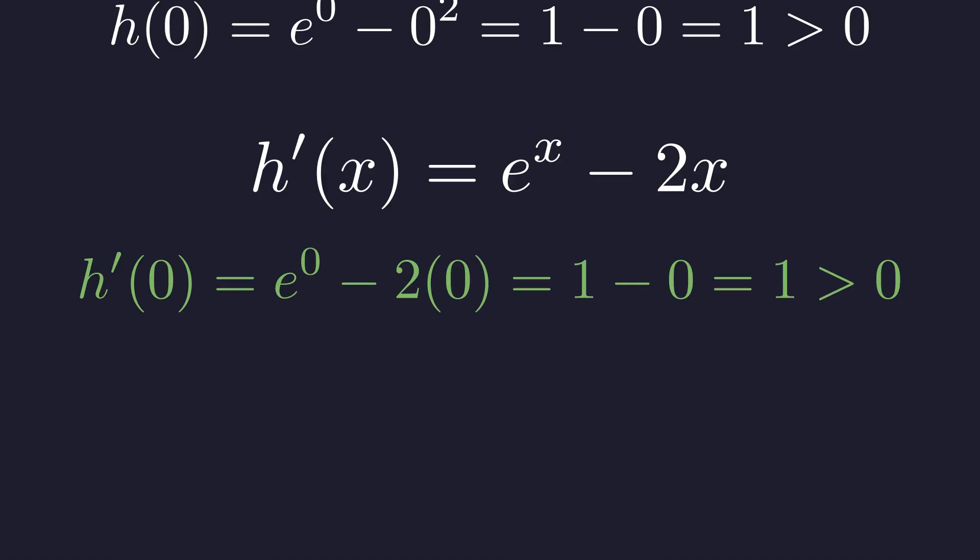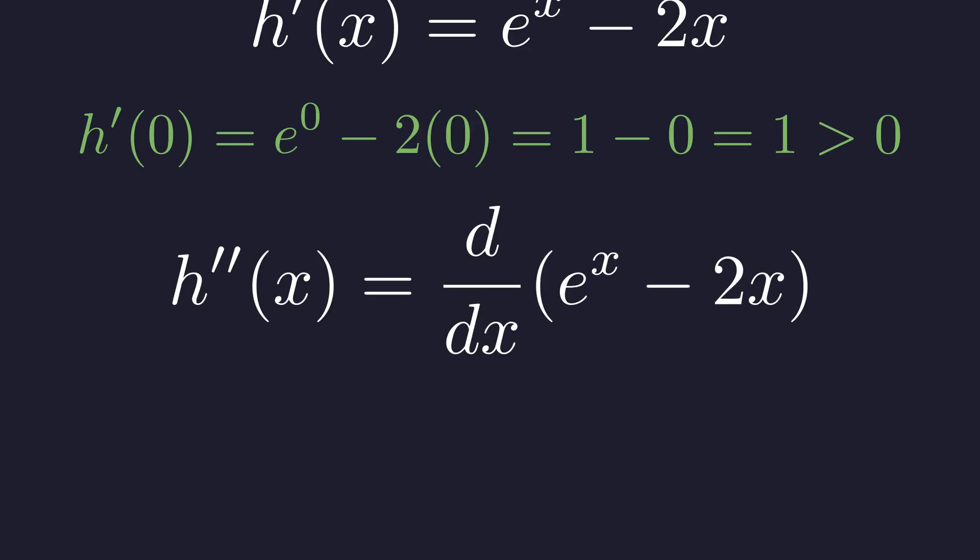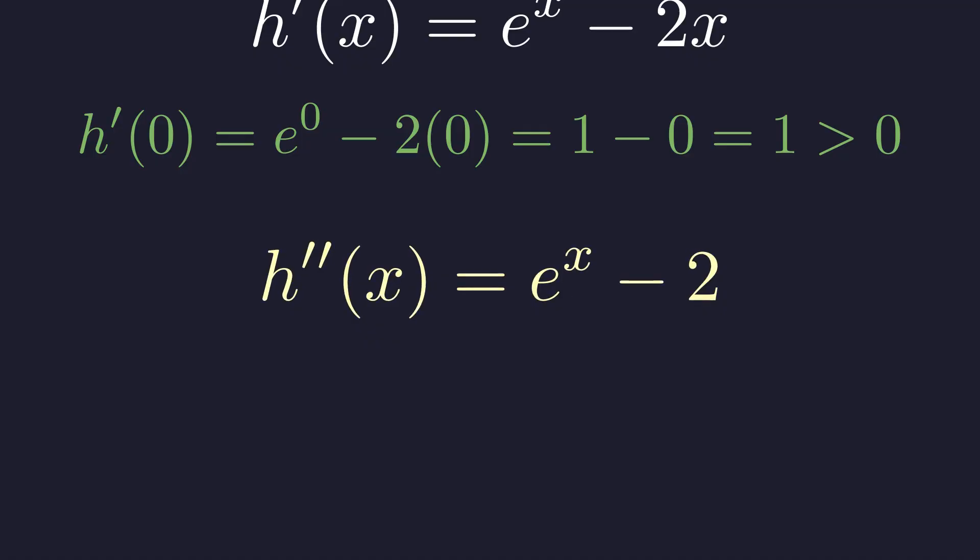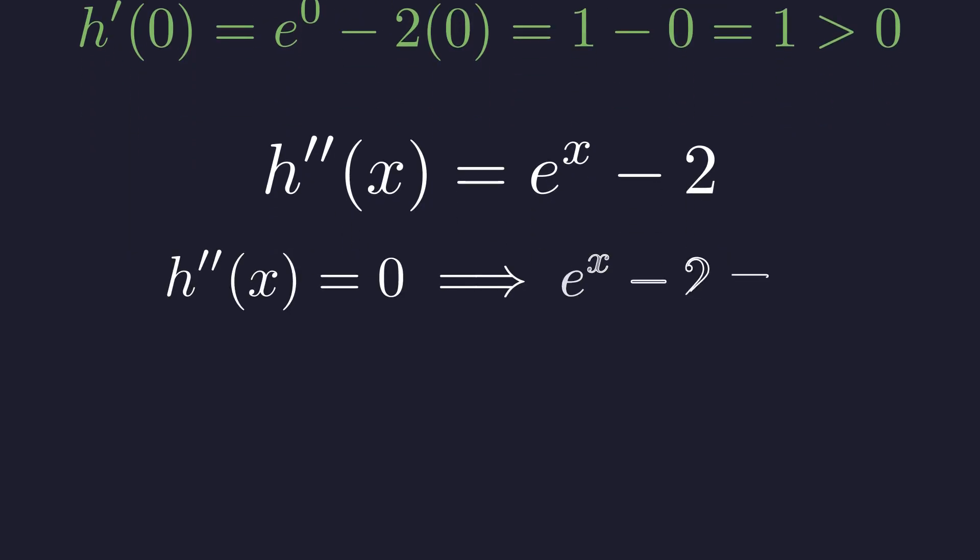Time for the second derivative. Taking the derivative of h prime, the second derivative of h is e to the x minus 2. Setting this equal to 0 to find critical points, so e to the x minus 2 equals 0, which means e to the x equals 2. Taking the natural logarithm of both sides, x equals the natural logarithm of 2, about 0.693.